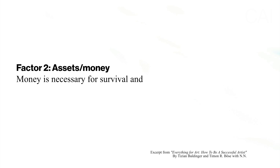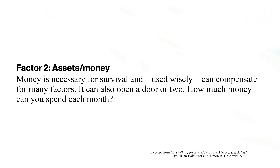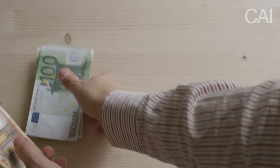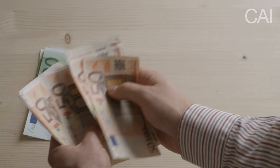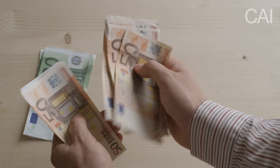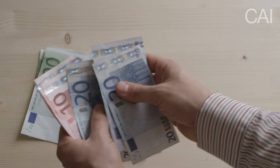Up next: assets, or money. Money is necessary for survival and, when used wisely, can compensate for many factors and open a door or two. How much money can you spend each month? If you can cover your living expenses plus a few materials, that's classified as sufficient. If your fixed costs are covered and you have 10k or more at your disposal every month, that is classified as good to very good.